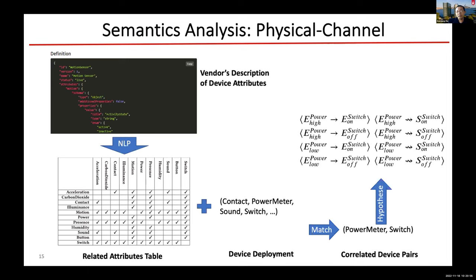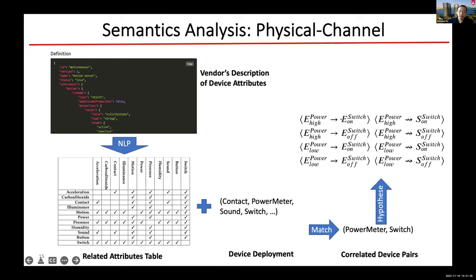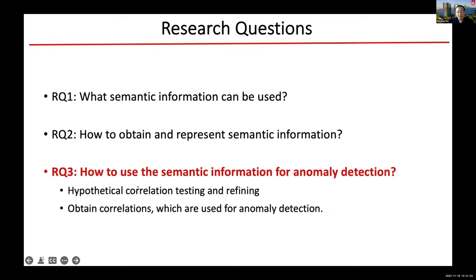If two are potentially correlated, there are two times eight — 16 — potential correlations. For user activity, we basically use motion sensors and presence detection to detect if the user is at home. After getting all this information, we need a uniform representation to implement in the system. We represented the correlations using the same correlation representation across channels. Because there are a lot of hypothetical correlations, we need to test them and refine them to get a final set of correlations.